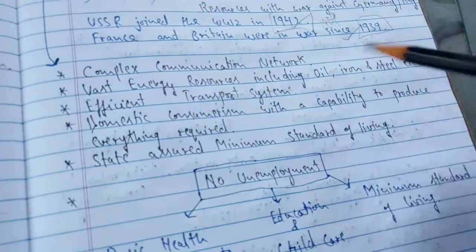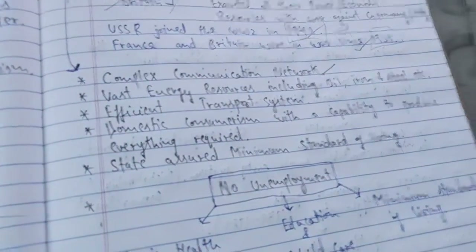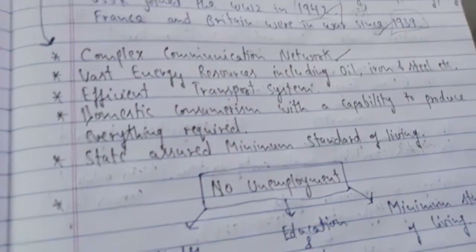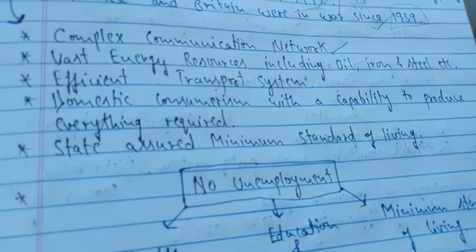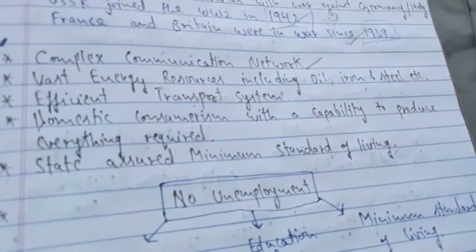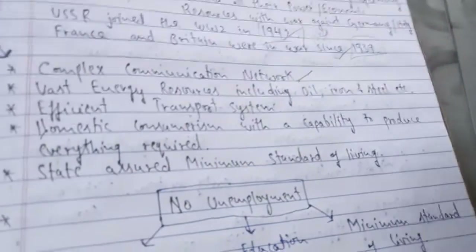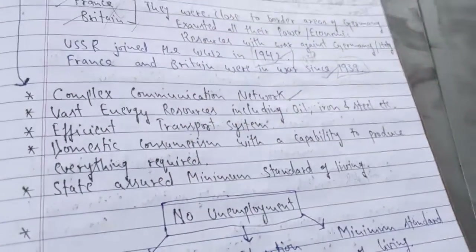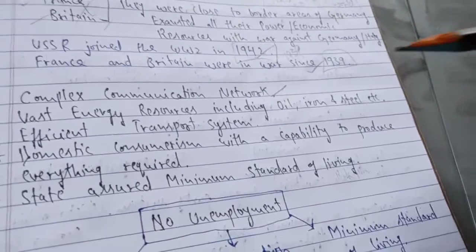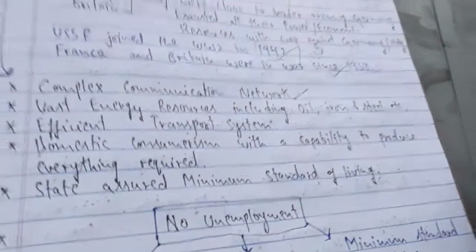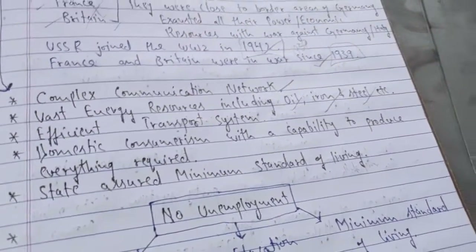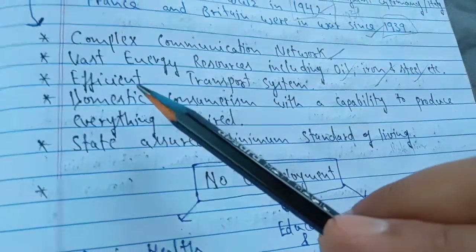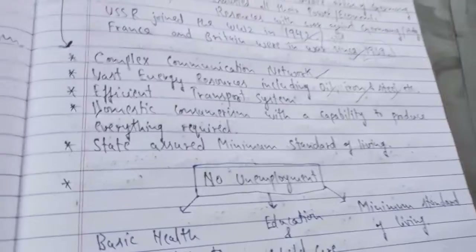Now, why was the USSR becoming a great power after the Second World War? The first reason was its complex communication network. As shown in the map from the last part, Russia along with 14 other countries covered a large area of the world. Because of this vast reach, a strong communication system was set up, and information could travel easily from one part of the USSR to another. The second reason was vast energy resources including oil, iron, and steel.